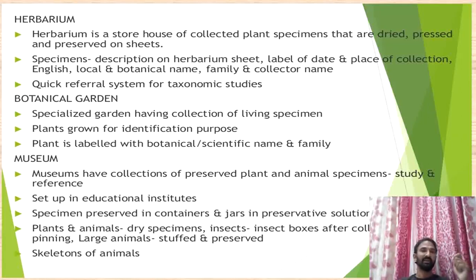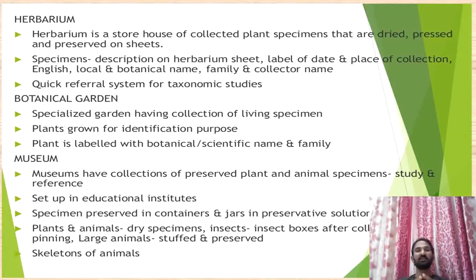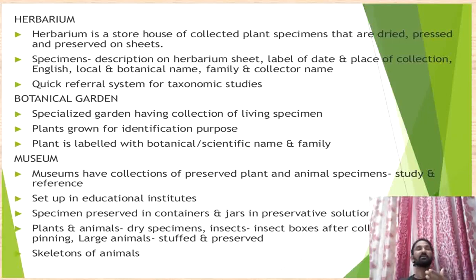The herbarium consists of a plant with leaf and inflorescence — it is collected, dried, pressed, and preserved on a herbarium sheet. On the herbarium sheet, a description is given in a box containing: date and place of collection, English name, local name, botanical name, family, collector name, etc. It is a quick referral system of taxonomical study. If you want to identify a new plant, you collect the twig and compare it with the herbarium sheet to determine whether the collected plant is new or already known.